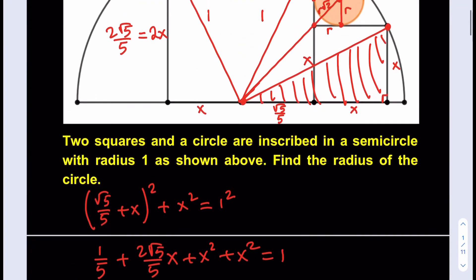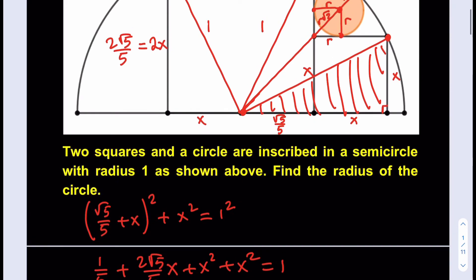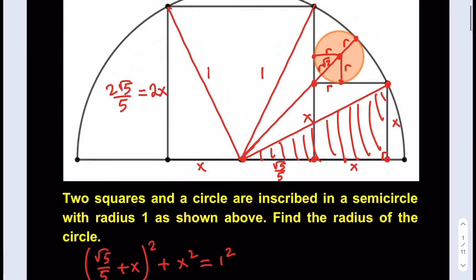So x equals √5/5. Notice that x is actually equal to the same value we found for the larger square — this is actually a midpoint. From the symmetry of the circle, this makes sense: the configuration is symmetric.